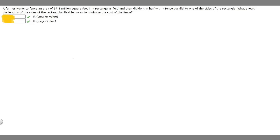Let's first try and draw a diagram of what they're asking us. So we have a rectangular field and the lines are basically the fence, and then it says divide it in half with a fence parallel to one of the sides of the rectangle. So basically this is what it's going to look like.